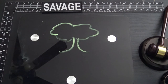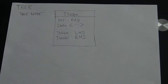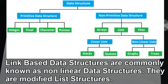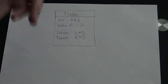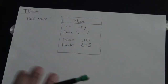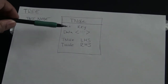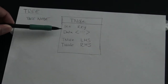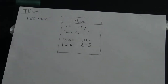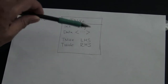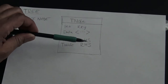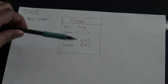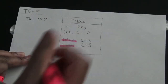In computer science, trees are upside down. A node is the basic building block of a link-based data structure. We have tree nodes, linked list nodes, and graph nodes. When we look at the elements of a tree node, we have values called keys - the key is the number inside the circle - we have the data inside the node, and then we have recursive links to other nodes: the left child node (LHS) and the right child node (RHS).